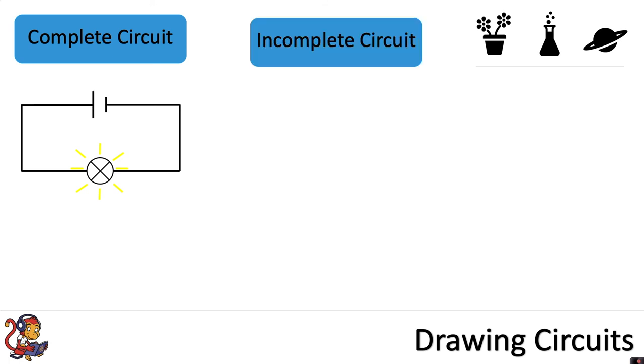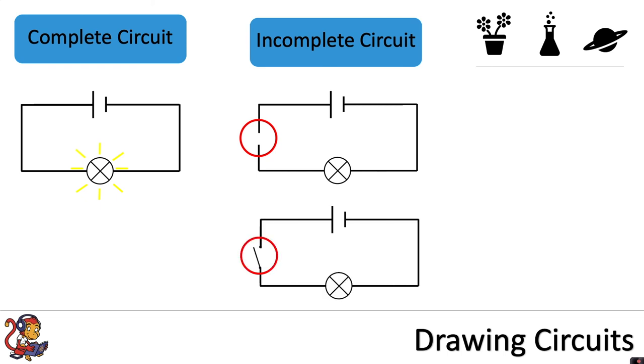However, you need to look out for incomplete circuits. For example, this one that shows a gap in the wire. This would mean that the lamp would not light up. Furthermore, you can put an open switch in a circuit. Whilst the switch is open the lamp will not light up. But if you were to close that switch then you would complete the circuit and the lamp would light up.